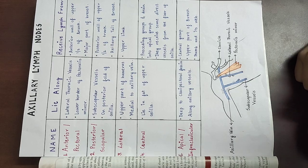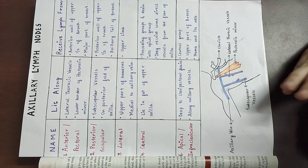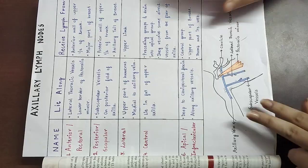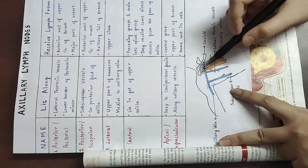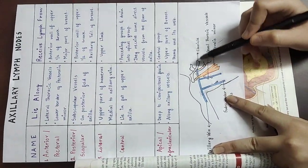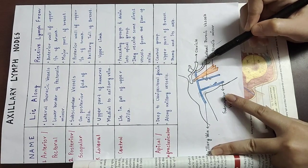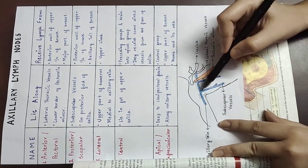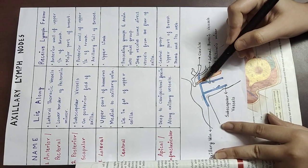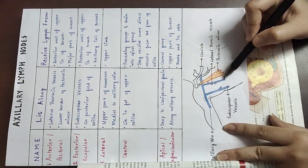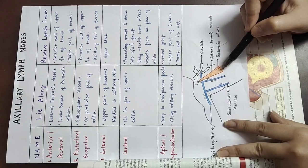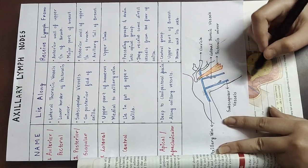We have five axillary lymph nodes total. Looking at the dry ground first: this is the clavicle, this is the first rib, and this is the axillary vein. This is the subscapula vessels, this is the lateral thoracic vessel, and this is the pectoralis minor muscle.